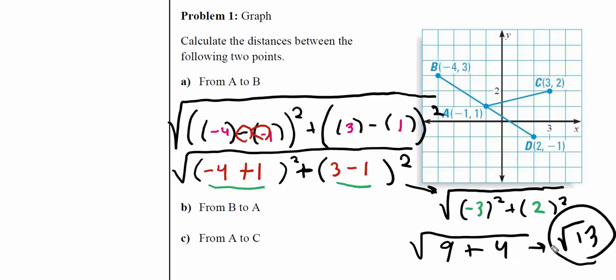Negative three squared is nine, two squared is four. I get square root of 13 as the answer. In the calculator, rounding to the nearest tenth, this is approximately 3.6. Get comfortable with both the radical answer and the decimal value.